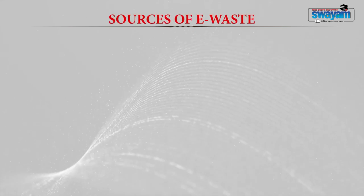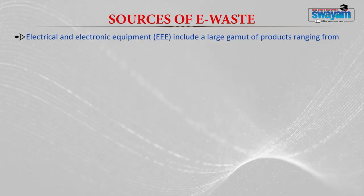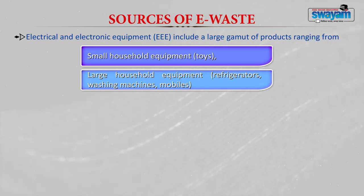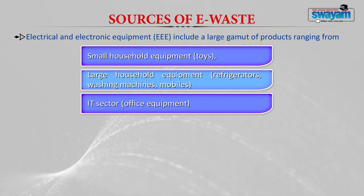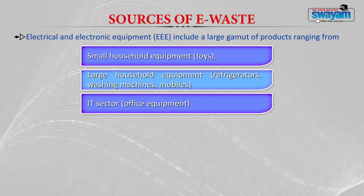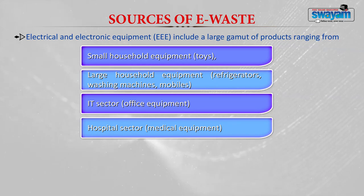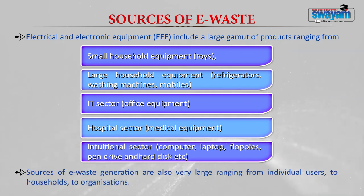Sources of e-waste include a large gamut of products: small household equipment like toys, large household equipment like refrigerators and washing machines, IT and office equipment such as discs, CDs, floppies, pen drives, broken hard disks, CPUs, and monitors. The hospital sector generates medical equipment waste, and the institutional sector — universities, schools, and colleges — generates computers, laptops, floppies, pen drives, and hard disks. Sources range from individual users to households to organizations.